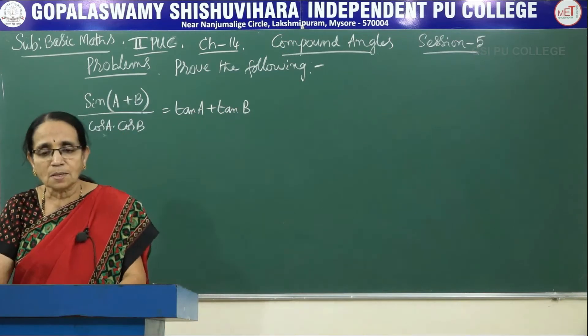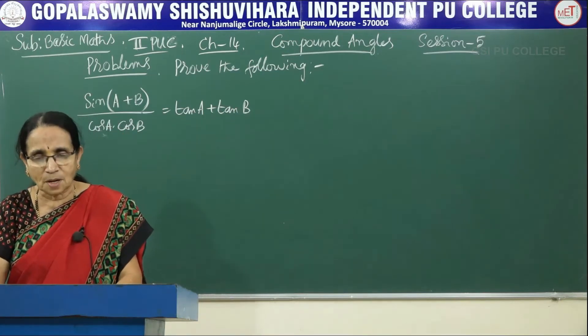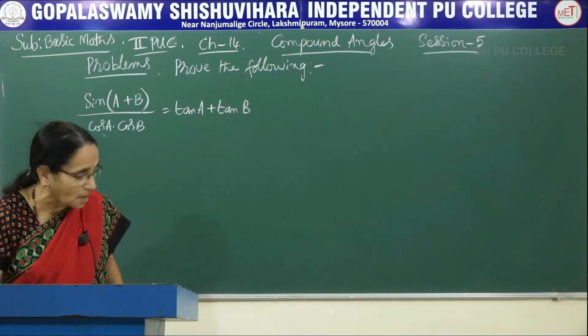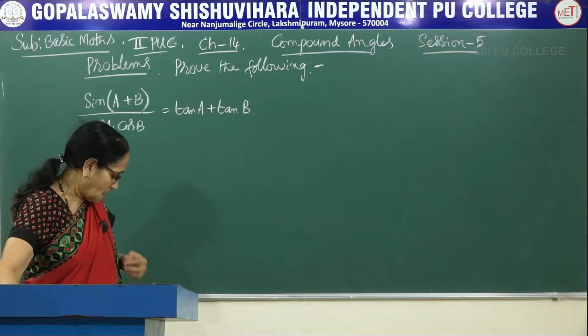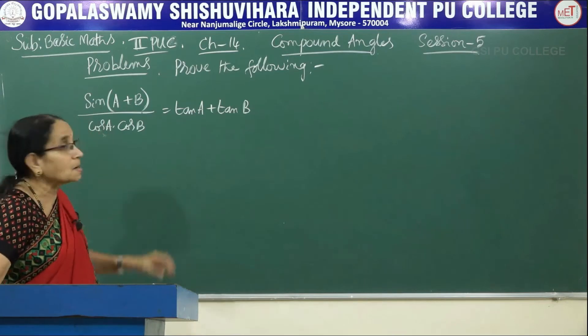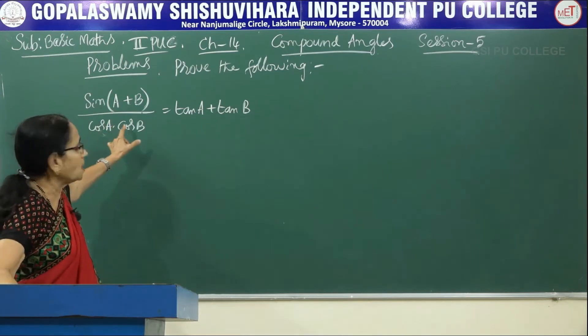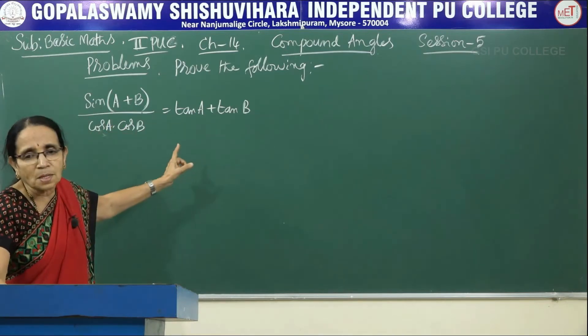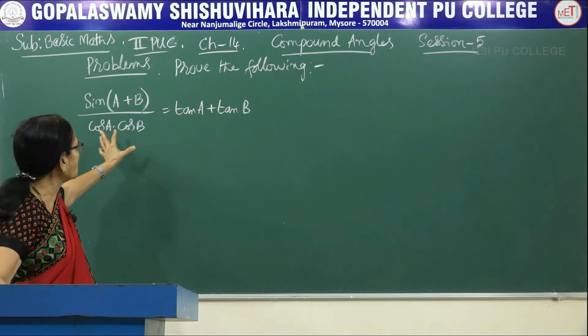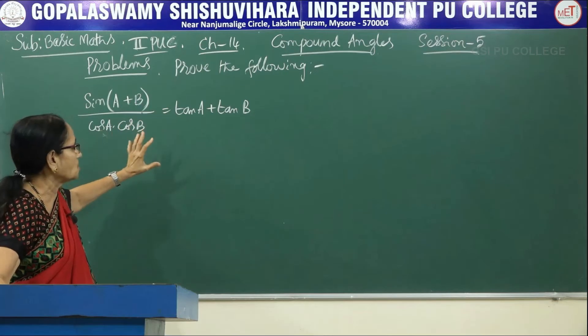Look at the left hand side. We have to start from the left hand side and arrive at the right hand side. So sin(A+B) divided by cosA·cosB.